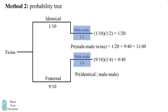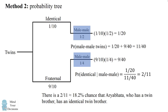The probability of identical twin brothers knowing that they are male twin brothers will be the ratio of the top branch to the entire probability, and this works out to be 2 over 11. Therefore, we get to the same answer of approximately 18.2%.